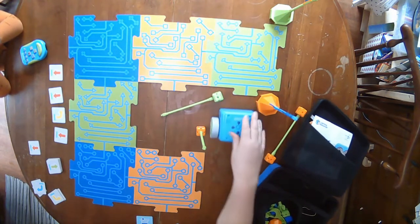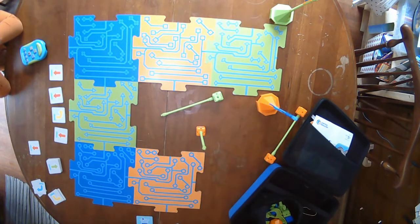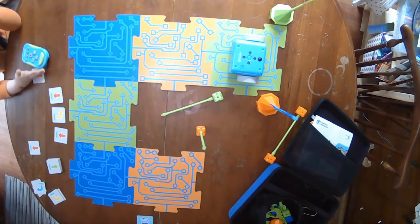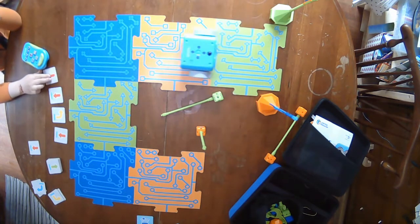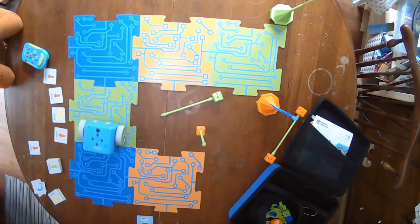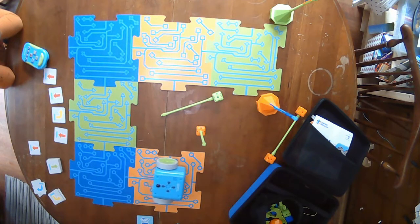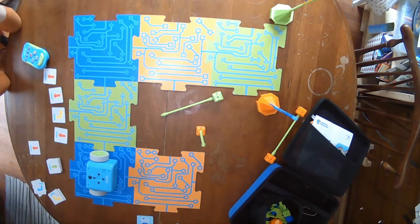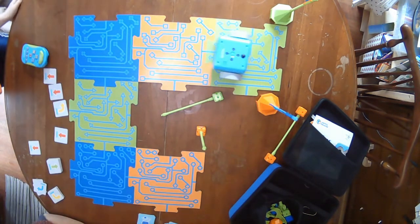Oops, we wrote the code for the whole path, but Botly was in the middle. Let's reset and see if we did it right. Yep, we can even make him go to the end and back again.